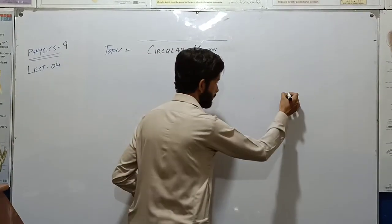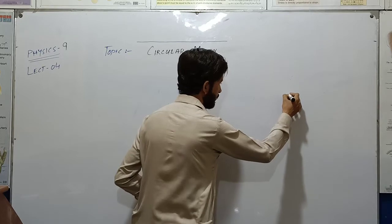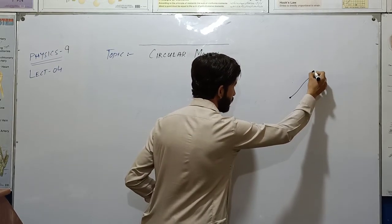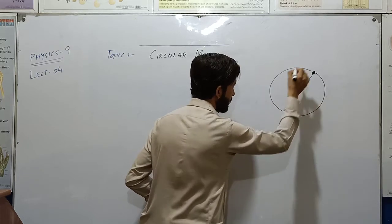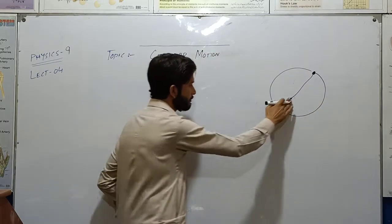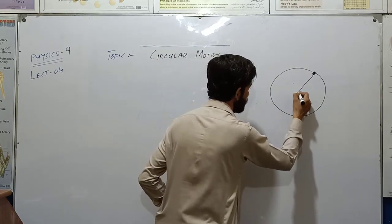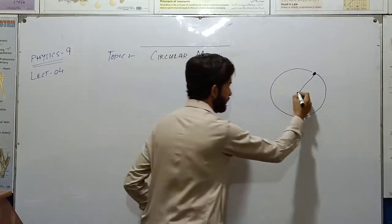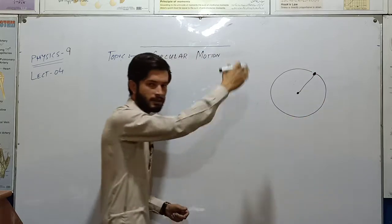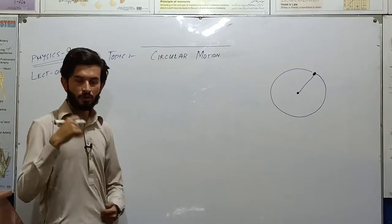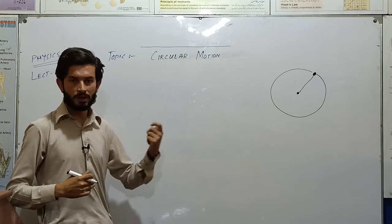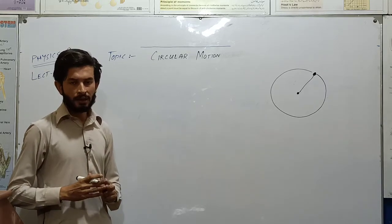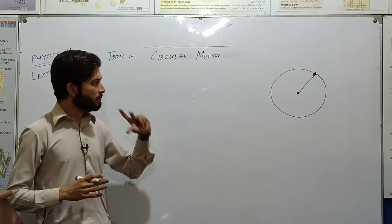In circular motion we have a built-in force. We have a fixed point — this is the fixed point — and the distance from that fixed point remains the same. This forms circular motion.